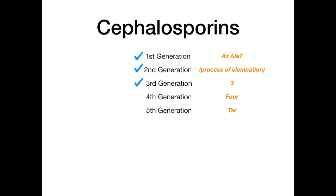Quick review so far: first generation — what's the first thing you ask? 'Do you have any ale?' — cefazolin, cephalexin. Second generation, we skip — if you don't recognize a cephalosporin and it doesn't fit the other mnemonics, guess second generation and you'll likely be right. Third generation: the mnemonic is 'three' — tri for ceftriaxone, tax for cefotaxime (taxes in the third month), and taz for ceftazidime (three Tasmanian devils).